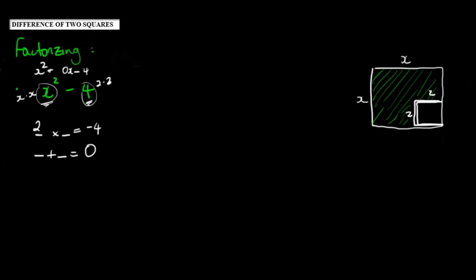Those two numbers would be 2 and negative 2 because 2 times negative 2 is negative 4 and 2 minus 2 is 0. So I can factorize this to be x plus 2 times x minus 2.